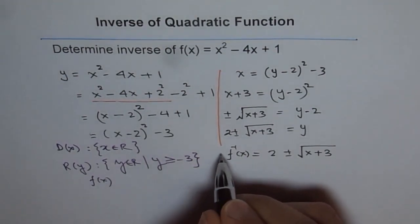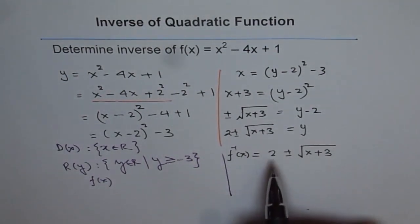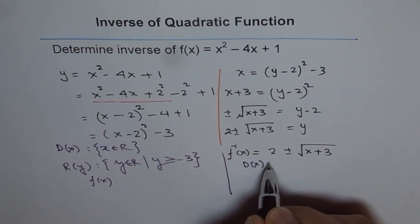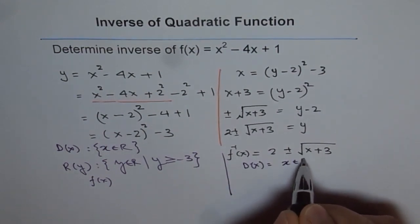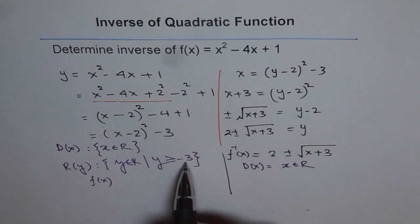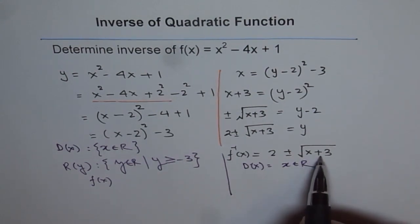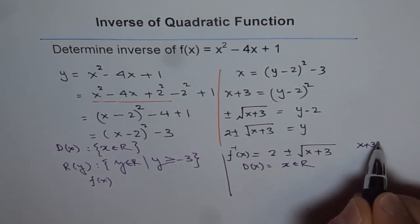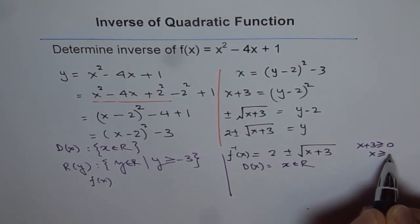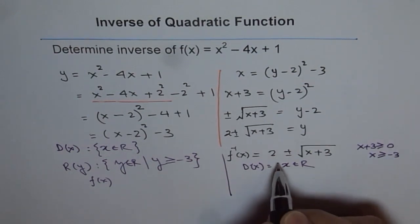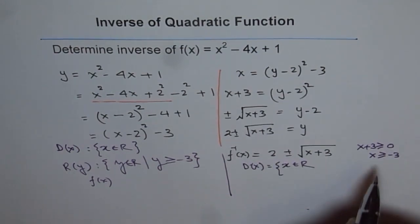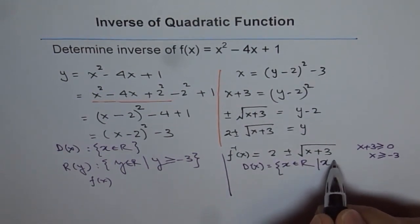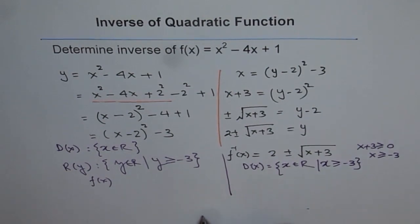Now we will write down for f⁻¹(x). For f⁻¹(x), it will flip. So we should write domain as x belongs to real numbers and x should be greater than or equal to -3. Do we get that? We can check from here. x + 3 should be greater than or equal to 0. That means x ≥ -3. That is perfect. So it's a check. Do you see that? It is a very important check. So we get domain x belongs to real numbers, where x ≥ -3.